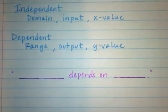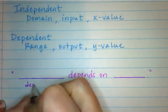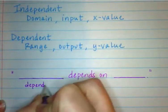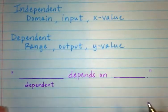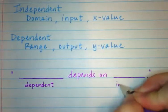What this means is that whatever we fill in here is the dependent, because the dependent will always depend on the independent.